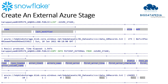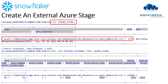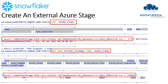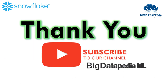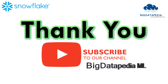Once the stage is successfully created, you can verify using the LIST command and see the respective data with its size. Then you can copy that into your external table using the COPY command and verify the data is properly loaded. Once all the process is over, you can verify using a SELECT query on the respective table and see the data properly.